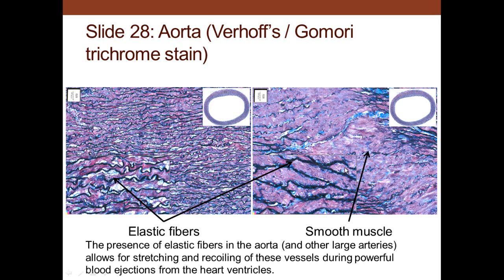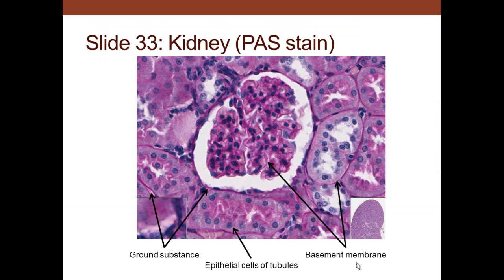Smooth muscle cells are present between elastic fibers in the aorta and other large vessels. Elastic fibers allow stretching and recoil of the vessel during powerful blood ejection from the ventricle, then recoil when the heart relaxes. In the kidney, PAS staining highlights the basement membrane around epithelium and the ground substance visible between and surrounding cells, since the kidney is composed of both connective tissue and epithelium.